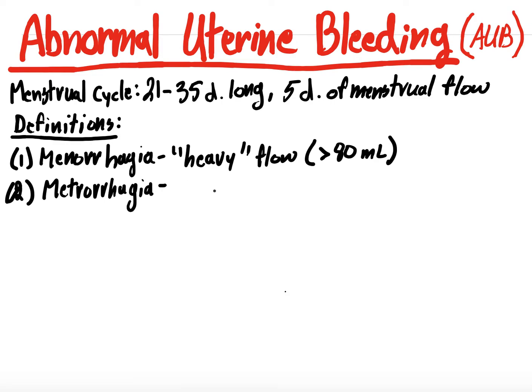This is going to be metorrhagia. And this one is bleeding between periods, right? So you have your normal menstrual flow, which is about five days. And then if you're having bleeding in between, we'll erase that. If you're having bleeding between your menses, that is termed metorrhagia. So those are two different types, right? So there's heavy flow when you're on your menses, and then there's bleeding between your normal menses.